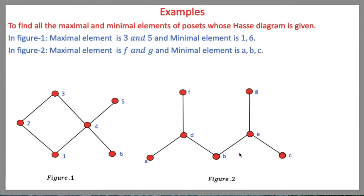We will study partially ordered sets and lattices. First, we will study some examples related to maximal and minimal elements, greatest elements, least elements, least upper bound, and greatest lower bound. In the previous lecture, we studied the definition of maximal and minimal elements. An element a is said to be maximal if there is no element c in A such that a is less than or equal to c. An element b is said to be minimal if there is no element c in A such that c is less than or equal to b, where a, b, c are elements of the set A.